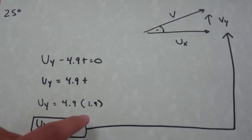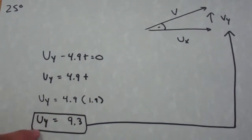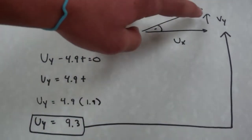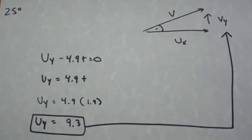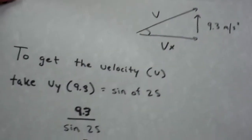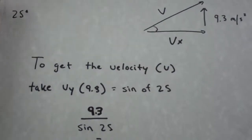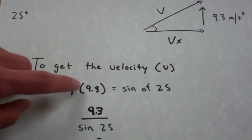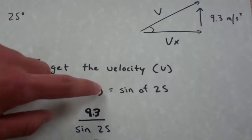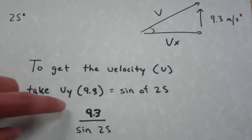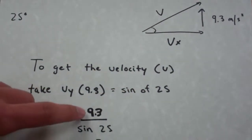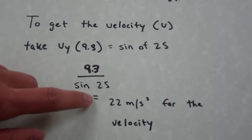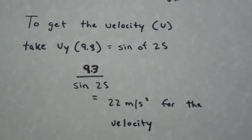We use our time of 1.9 seconds to get a Vy of 9.3 meters per second, which we will plug in. We will now find the velocity, so we will take Vy, or 9.3, equal to the sine of 25 degrees. So 9.3 we divide by the sine of 25 to get a velocity of 22 meters per second.